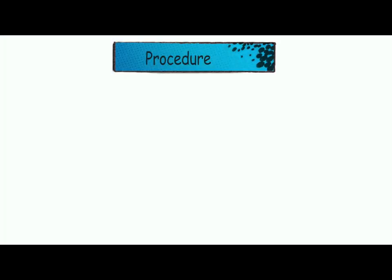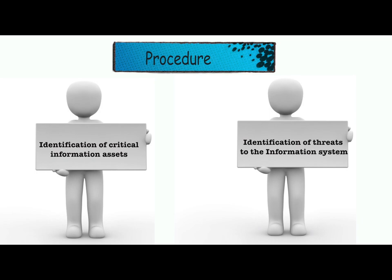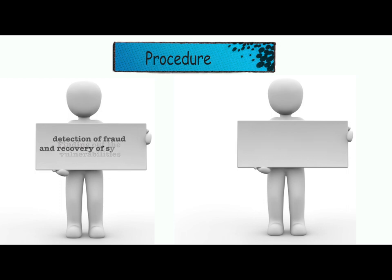Every organization should work out detailed procedures for developing information security systems. The procedure should include identification of critical information assets, identification of threats to the information system, finding out the vulnerabilities, and taking preventive measures to avoid the threats. It should also include working out the mechanism for detection of fraud and recovery of systems after an attack, and training for the people.